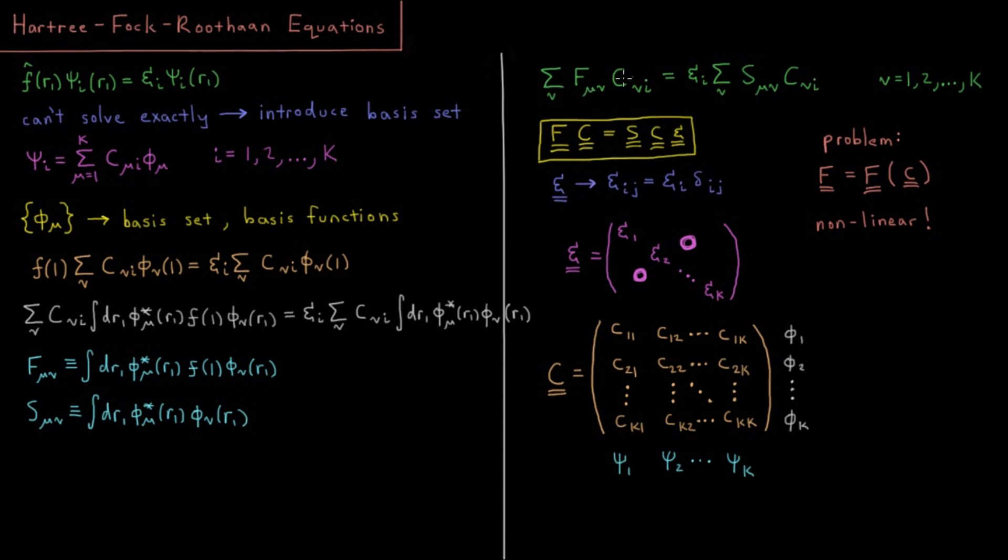Putting these two things together, what you basically have is this type of expression where you have the matrix F times the matrix C equals matrix S times matrix C times matrix epsilon. The F being the Fock matrix, S being the overlap matrix, epsilon being a diagonal matrix which only contains the orbital energies.